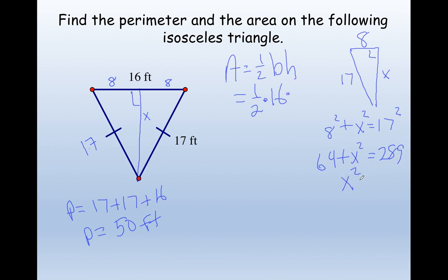Let's subtract 64 from both sides. x is equal to 15. So this is 15, which is my height. 1 half of 16 is 8. 8 times 15 is 120 feet squared for my area.